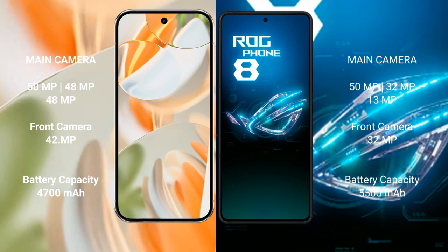The Google Pixel 9 Pro has a 4700 mAh battery with 27-watt fast charging support. The Asus ROG Phone 8 has a 5500 mAh battery with 65-watt fast charging support.